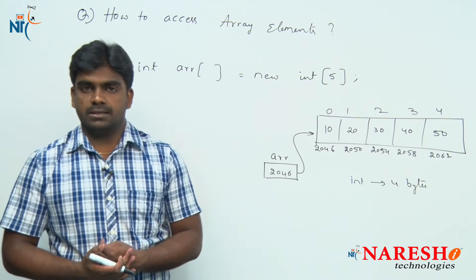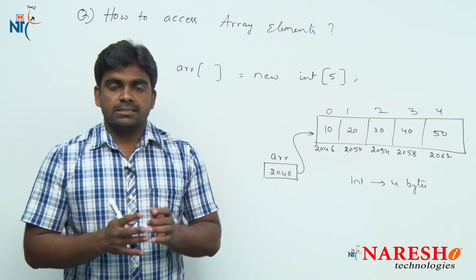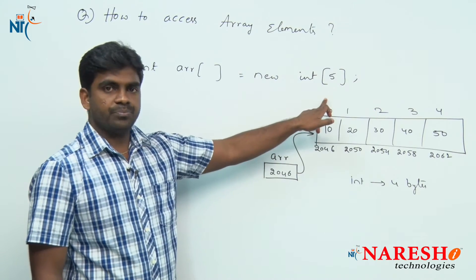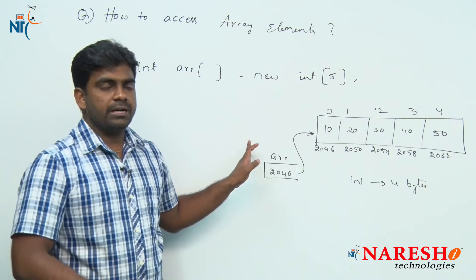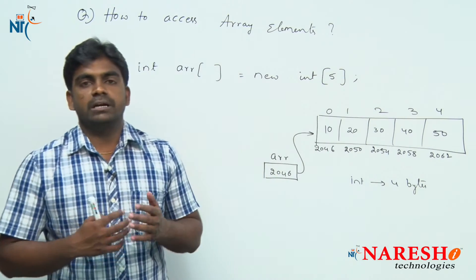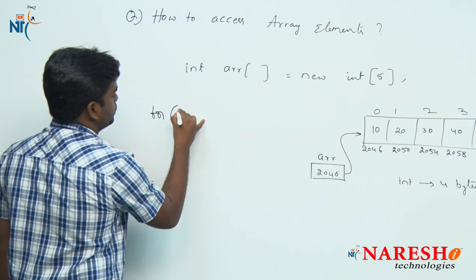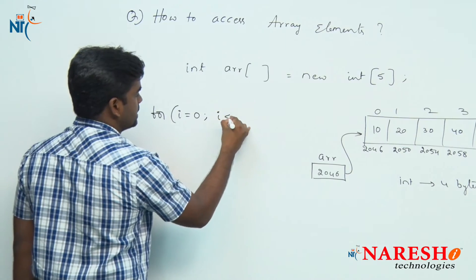Now the concept is accessing. Generally we need to access array elements with the help of an index. Here, every time instead of writing array of 0, array of 1, array of 2, it is better to use a for loop. As i value starts with 0, its index, and i is less than...